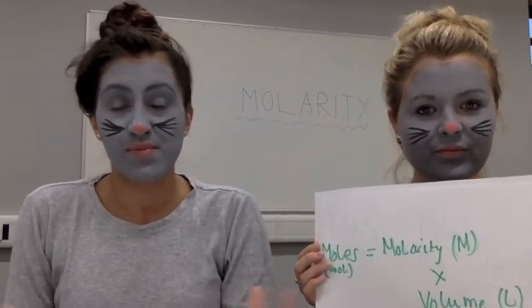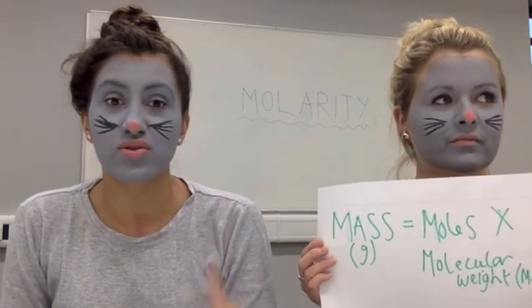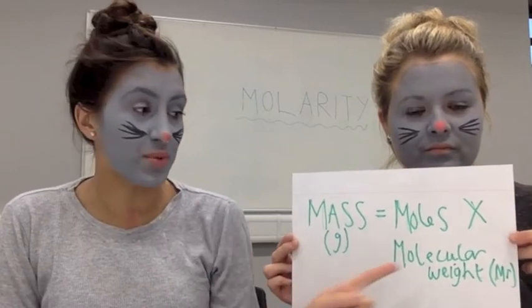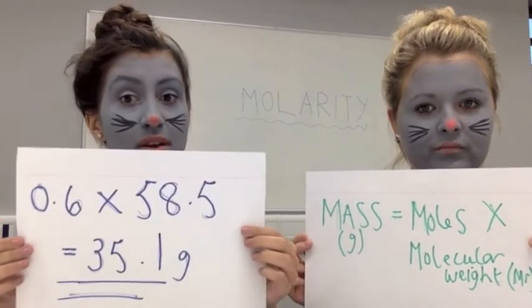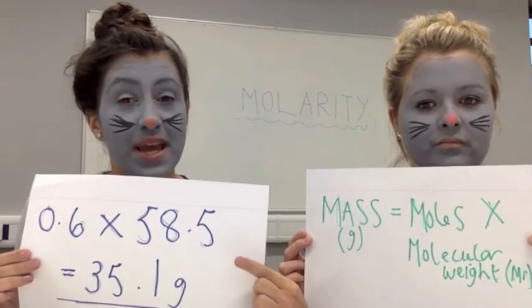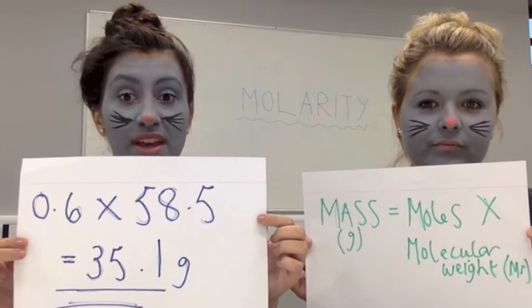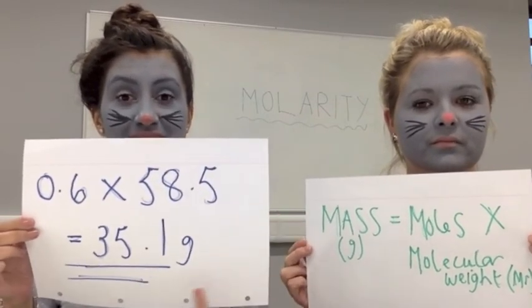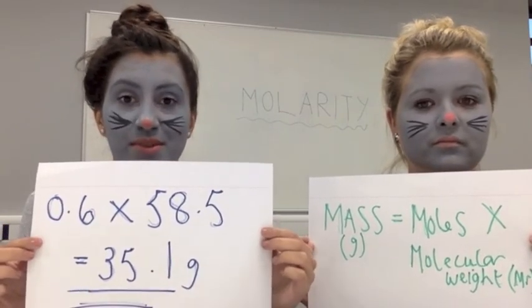Now we have the number of moles, we can work out the grams using equation 1. Rearranging that first equation so that we can find the mass: we've already got the moles, which is 0.6, and we know that the molecular weight of sodium chloride is 58.5. Multiplying these two values together gives us 35.1 grams of sodium chloride — this is the amount you would weigh out to make up a total 1 litre solution of sodium chloride.